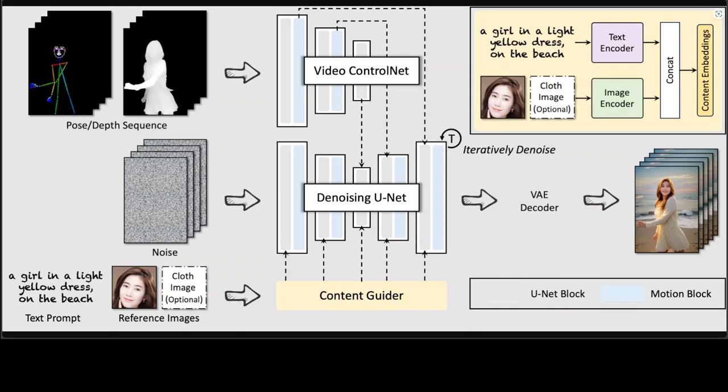The video ControlNet processes a control sequence — whether it is poses or depths — to produce additional temporal residuals. The denoising unit is a derived stable diffusion unit with motion blocks for video generation. The content guider transfers the input text prompts and appearance expressions such as a human face; clothing is optional and is converted to content embeddings for cross-attention.